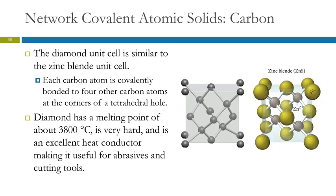Diamonds are not conductive — they do not conduct electricity because they don't have an extended pi bonding network. Each carbon atom is covalently bonded in a tetrahedral arrangement to four other carbon atoms, which is sp3 hybridization. There are no pi orbitals or pi bonds at all. Diamond has a really high melting point, is very hard, and conducts heat well. It's great for abrasives and cutting tools because you want something hard that will also conduct heat away from what you're cutting, since friction can make things extremely hot.